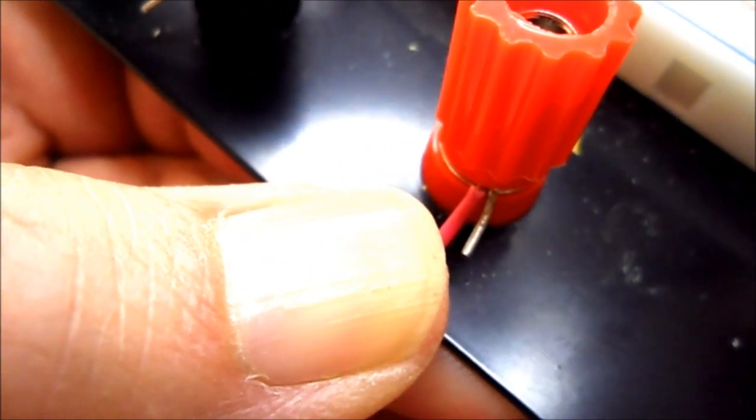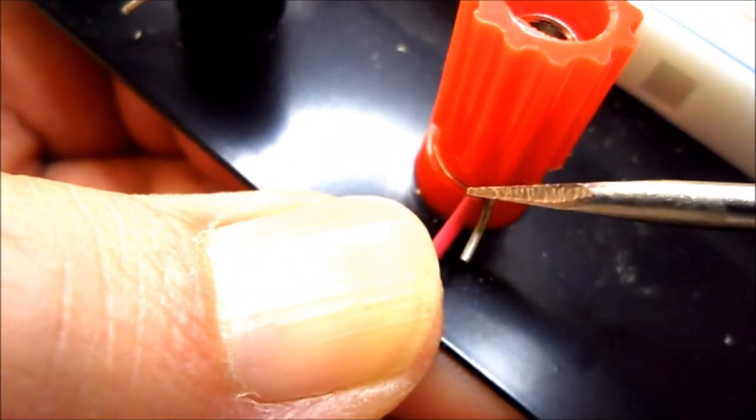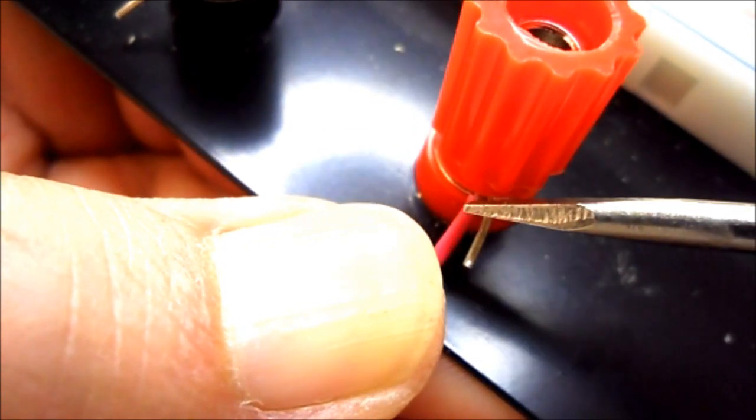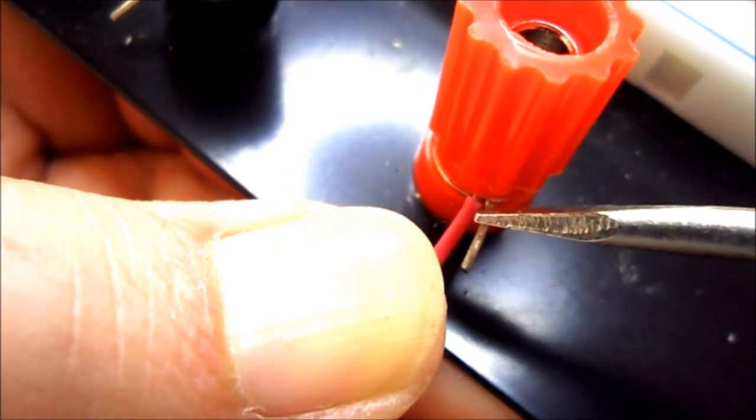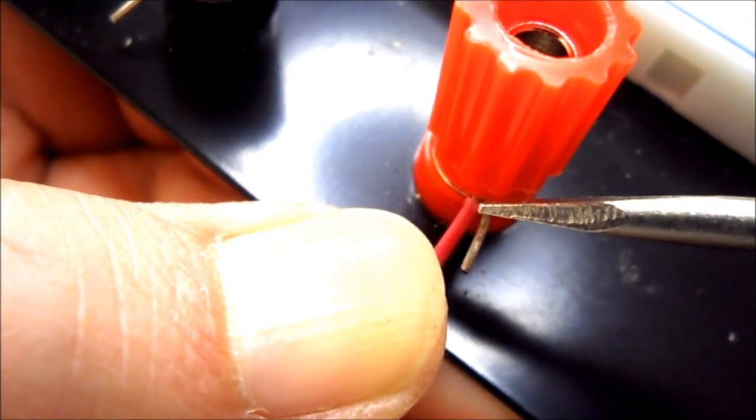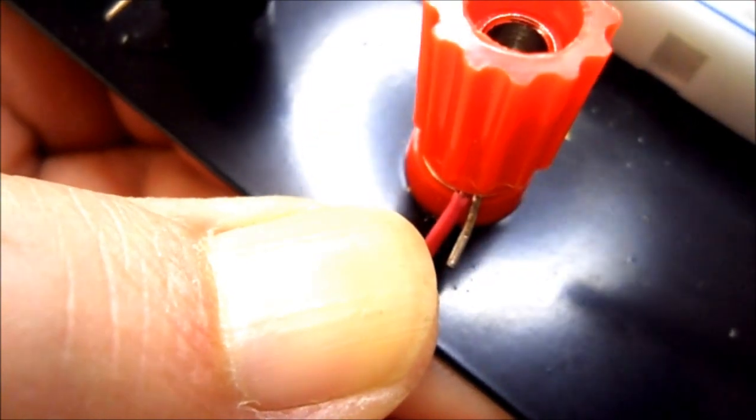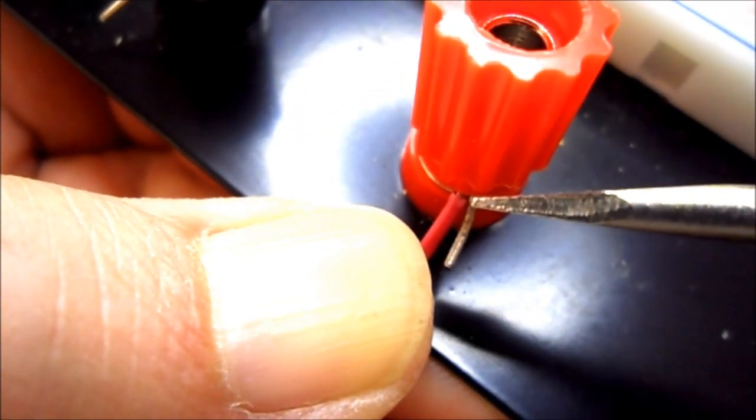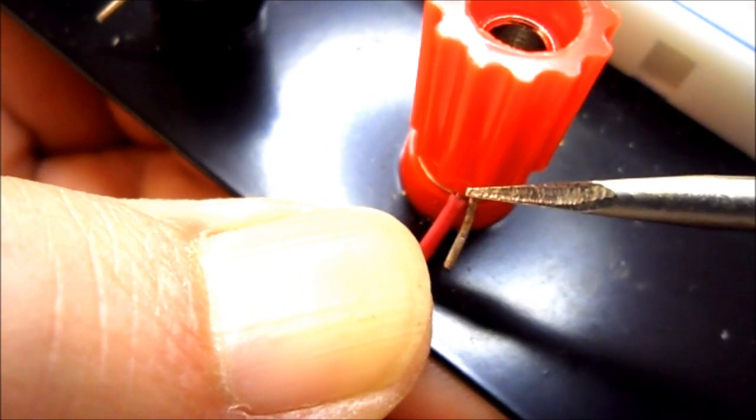Right, so as I pull this back here, you can see that the insulation is just back a little bit from the terminal. You need good metal-on-metal connection for electricity to flow.